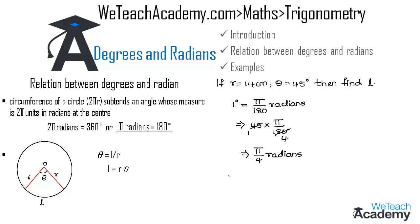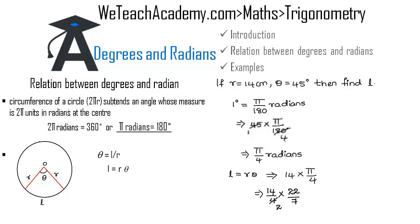Now we find L, the length of arc, using the formula L = Rθ. Substituting R = 14 and θ = π/4, we get L = 14 × π/4. Substituting π = 22/7, we get 14 × (22/7) / 4. Simplifying: 14/7 = 2, then 2 × 22 = 44, and 44/4 = 11. So the result is 11 centimeters, which is the length of the arc. This concludes the basic introduction on degrees and radians.